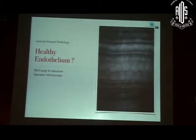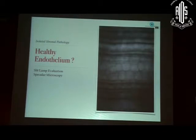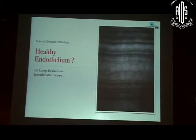Before you do anything else, whenever you are thinking that this is a case for DALK, try to get an idea of whether the endothelium is healthy or not. If you are able to see the endothelial reflex in some part of the cornea that is clear, it is a good idea to get a specular image or do a specular examination. If not, you can look for indirect evidence — look for any evidence of edema in the cornea. If there is no edema, that means the endothelium is likely to be healthy.